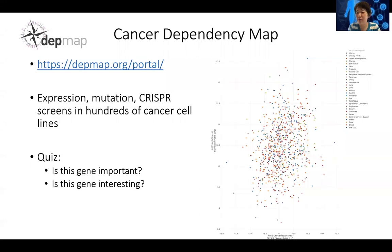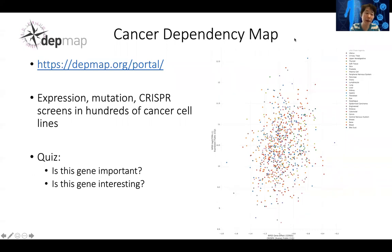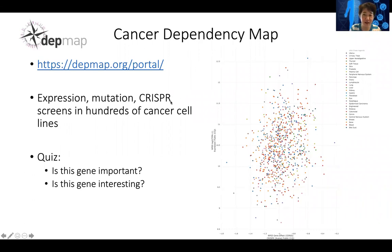CRISPR screen is a really powerful technique and many scientists are starting to use CRISPR screens, especially for cancer research. One major project conducted at the Broad Institute is called the DepMap, or Cancer Dependency Map. The Broad Institute has collected thousands of cancer cell lines whose expression, mutation, and copy number variation have been previously characterized, and some have also gone through drug and chemical screens. Now the Broad Institute has also generated CRISPR screens in hundreds of cell lines.